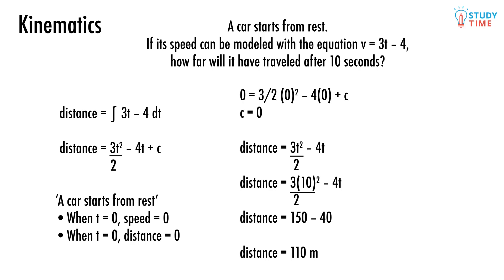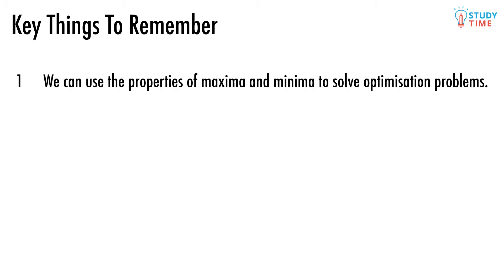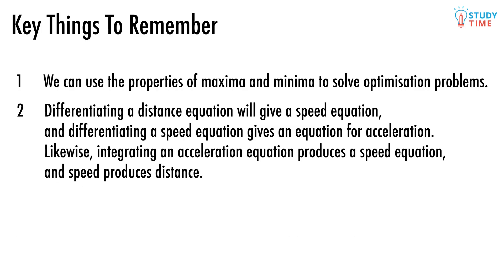And there you have it. Everything you could possibly want to know about kinematics and possibly some things that you didn't. Remember, we can use the properties of maxima and minima to solve optimization problems. Differentiating a distance equation will give a speed equation and differentiating a speed equation gives an equation for acceleration. Likewise, integrating an acceleration equation produces a speed equation and speed produces distance.